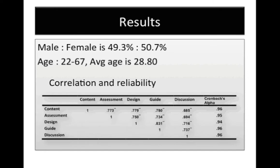The results of the correlation analysis show that all correlation coefficients between the five factors were significant. The strongest correlation was found between design and guide; the weakest was between content and discussion. Overall, the values were high and suggested high correlation between the factors. Reliability of the five factors was determined by computing Cronbach's alpha, which averaged 0.96, indicating a strongly reliable measure.